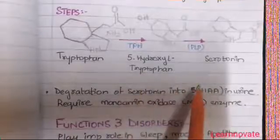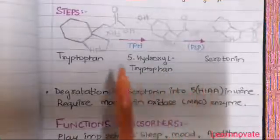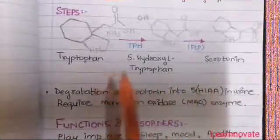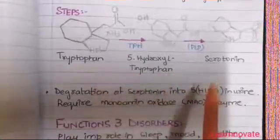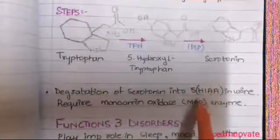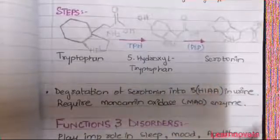So this is the pathway through which serotonin is synthesized from tryptophan and at last it is excreted as 5-hydroxyindoleacetic acid.